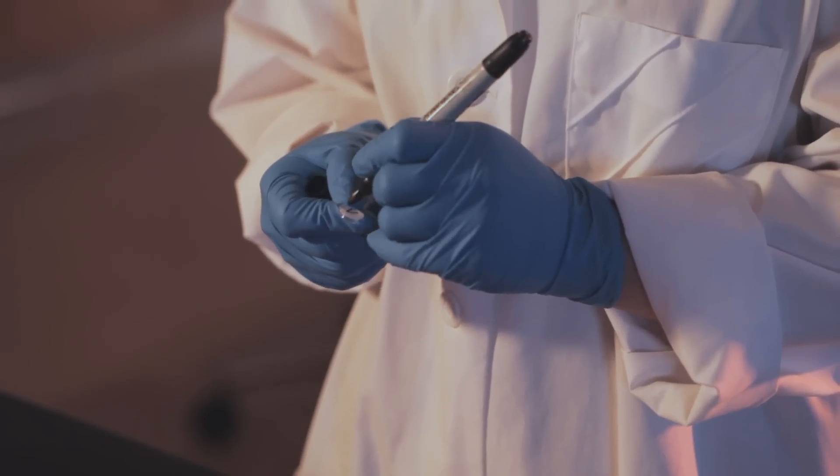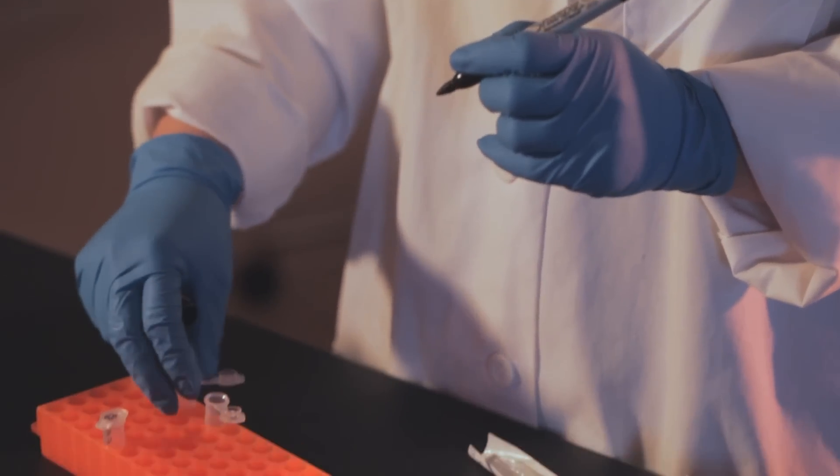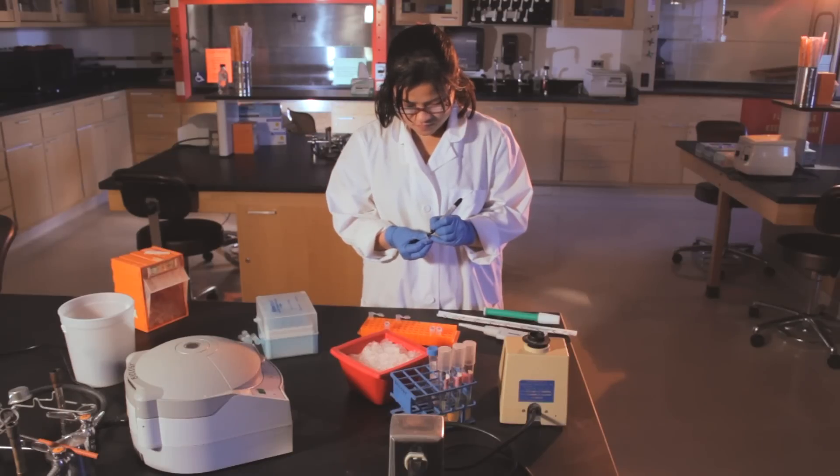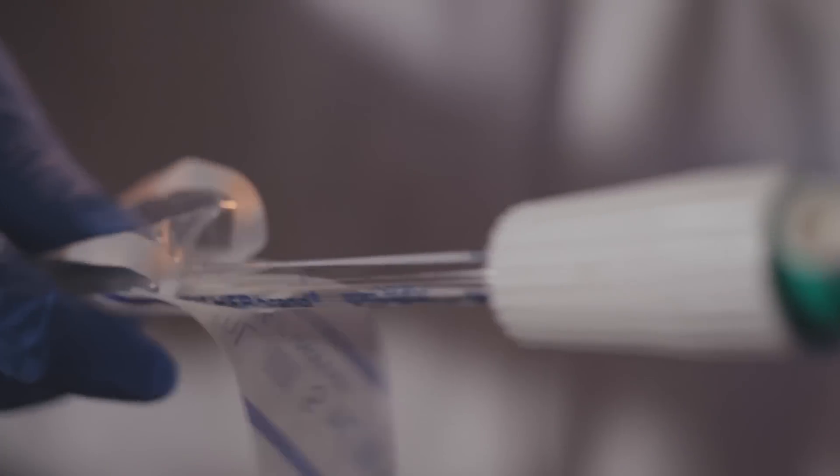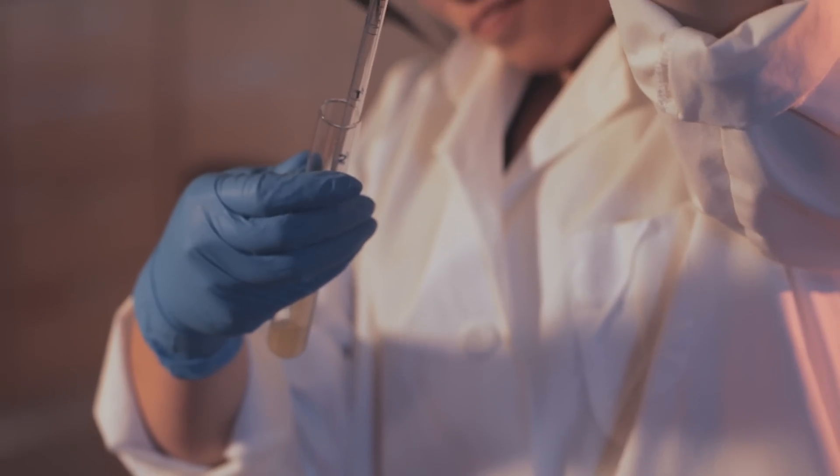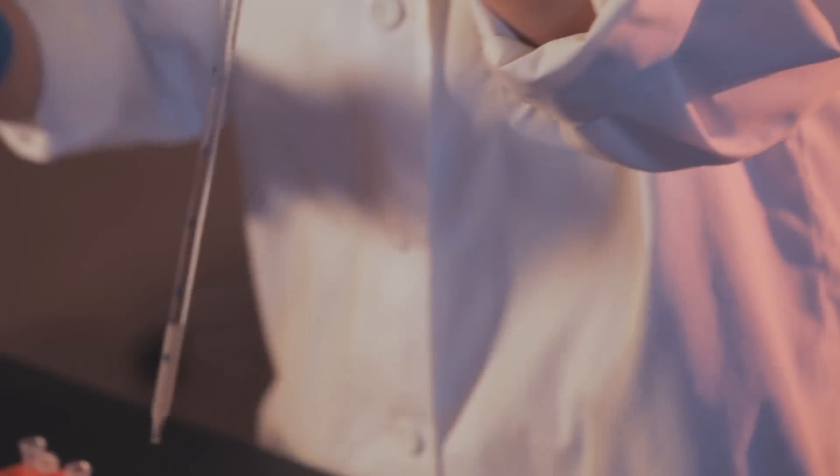Label the 1.5 milliliter microfuge tubes you will need. You will label one tube per culture. Using sterile 5 milliliter pipettes, pipette 1.5 milliliters of each culture into the appropriate labeled microfuge tube. Use a fresh pipette for each culture to avoid contamination.